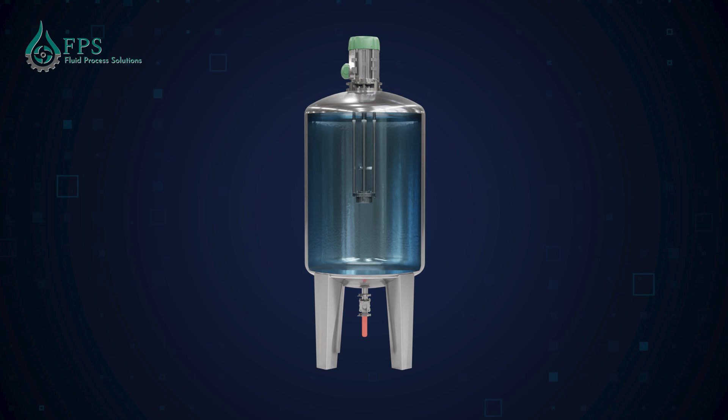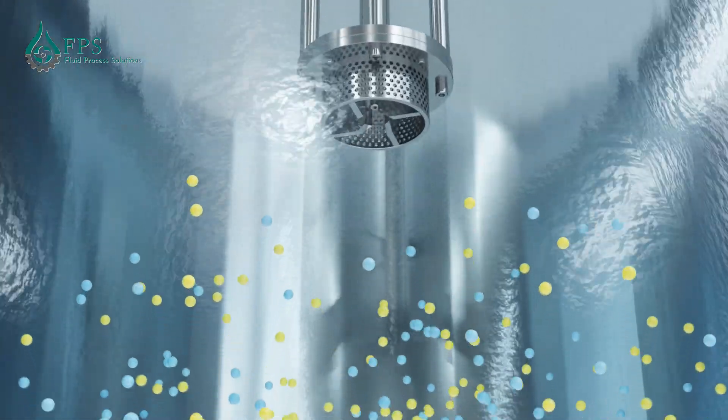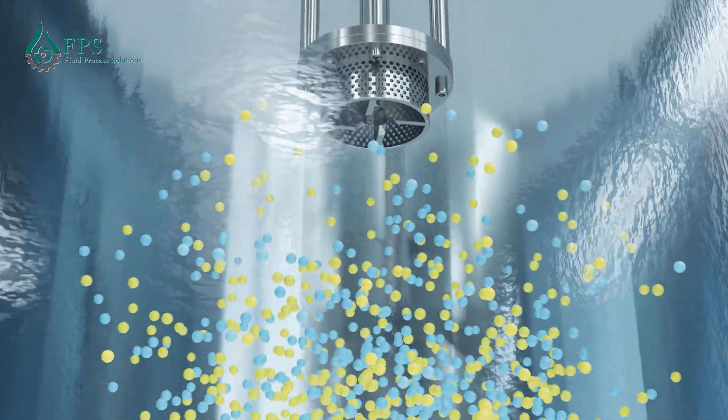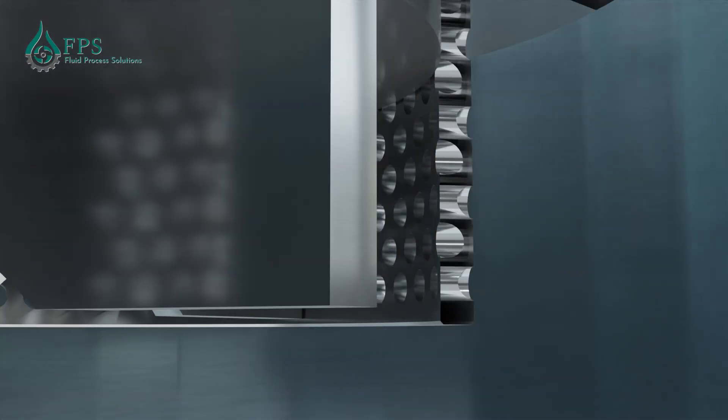FPS homogenizers work on the principle of high shear force produced between the rotor-stator working heads. High-speed rotation of the rotor draws liquid and powder material inward to the rotor eye, where centrifugal force throws the material outward to the inner walls of the stator.